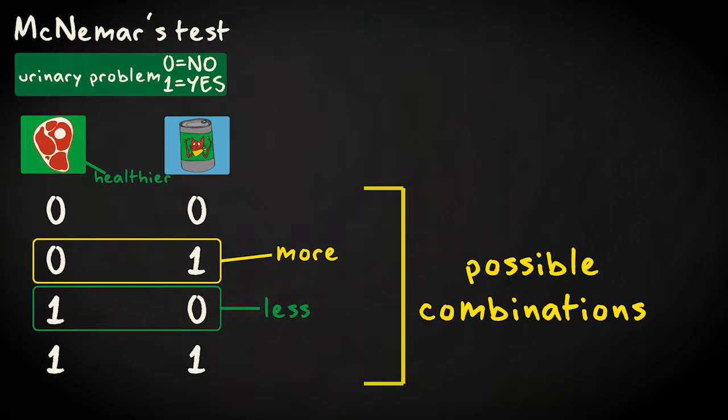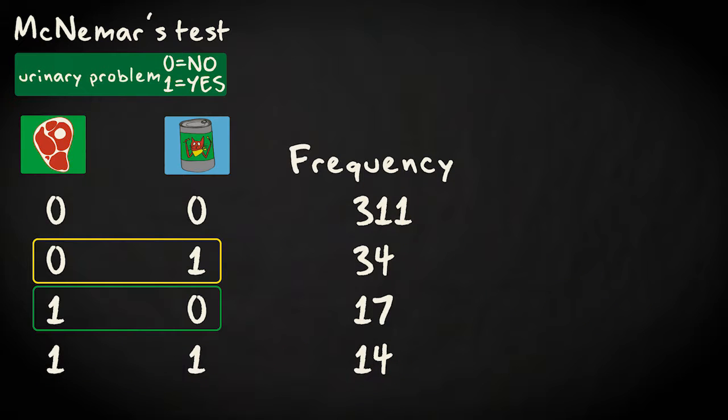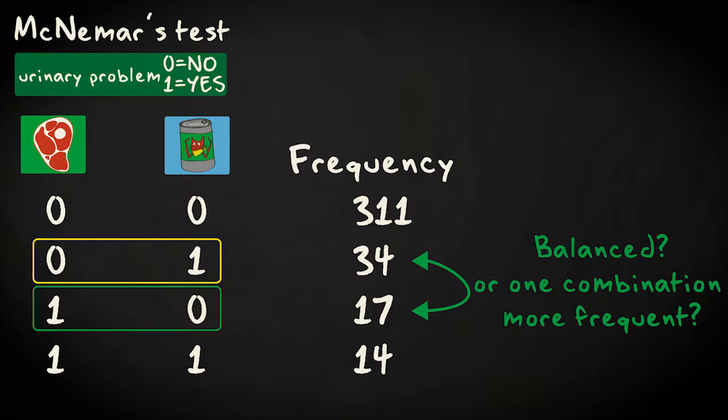We also expect less instances of combination three, with cats on raw food having urinary problems and their counterpart being healthy. The other combinations don't matter. They don't contribute to the difference between the diets. To determine the effect of diet in these dependent samples, we just have to look for balance or imbalance in the inconsistent combinations.